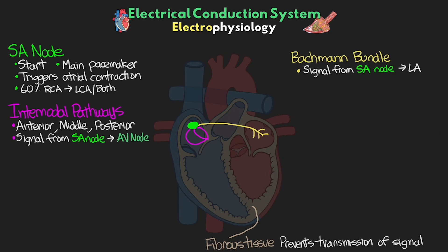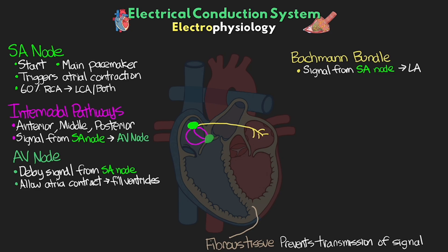We have our atrioventricular node, or the AV node, located again in the right atrium, near the coronary sinus and the tricuspid valve. This group of cells is specialized for the purpose of delaying the signal from the SA node briefly before sending it along to the ventricles. This delay is important as it's going to allow time for the atria to contract and thus completely fill the ventricles prior to their contraction. The AV node is exclusively supplied by the right coronary artery.